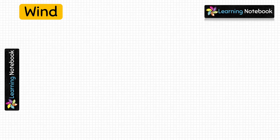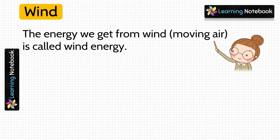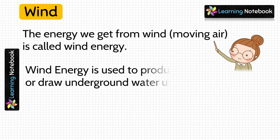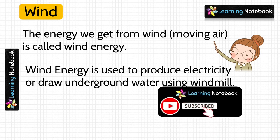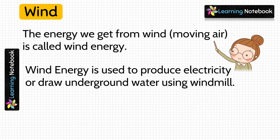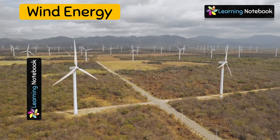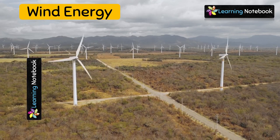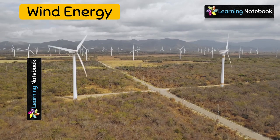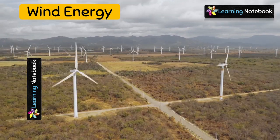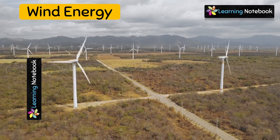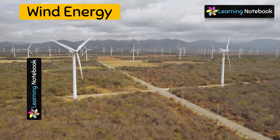The next source of energy is wind. The energy we get from wind — that is, moving air — is called wind energy. Wind energy is used to produce electricity or draw underground water with the help of windmills. Wind energy moves the fans of windmills, which in turn move the shaft of a generator and produce electricity.